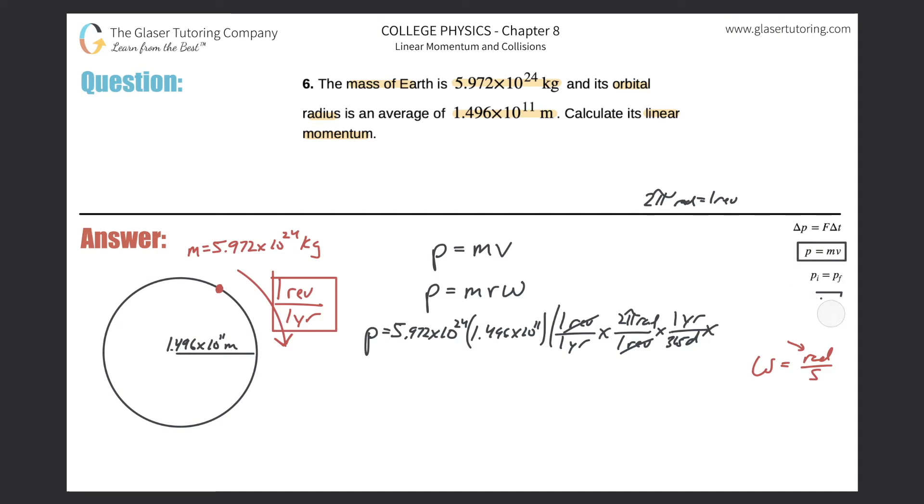Days on the top, hour on the bottom. One day is 24 hours. Days cancel. And then hour into second. So hour on the top, second on the bottom. One hour is 3600 seconds. Great.